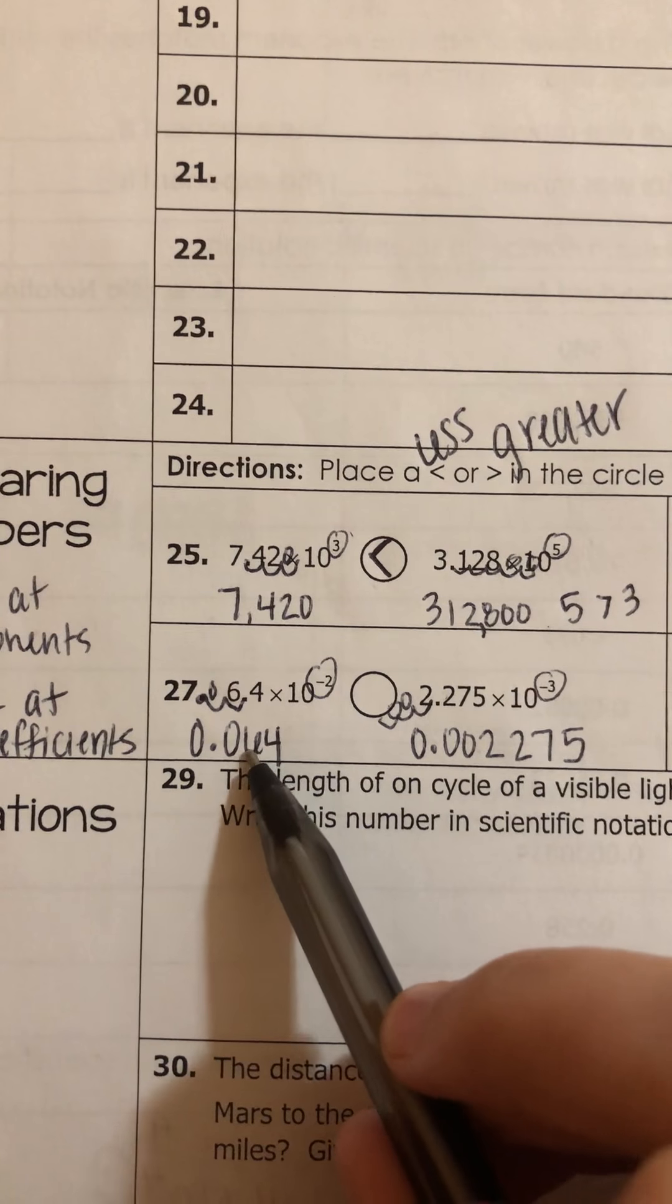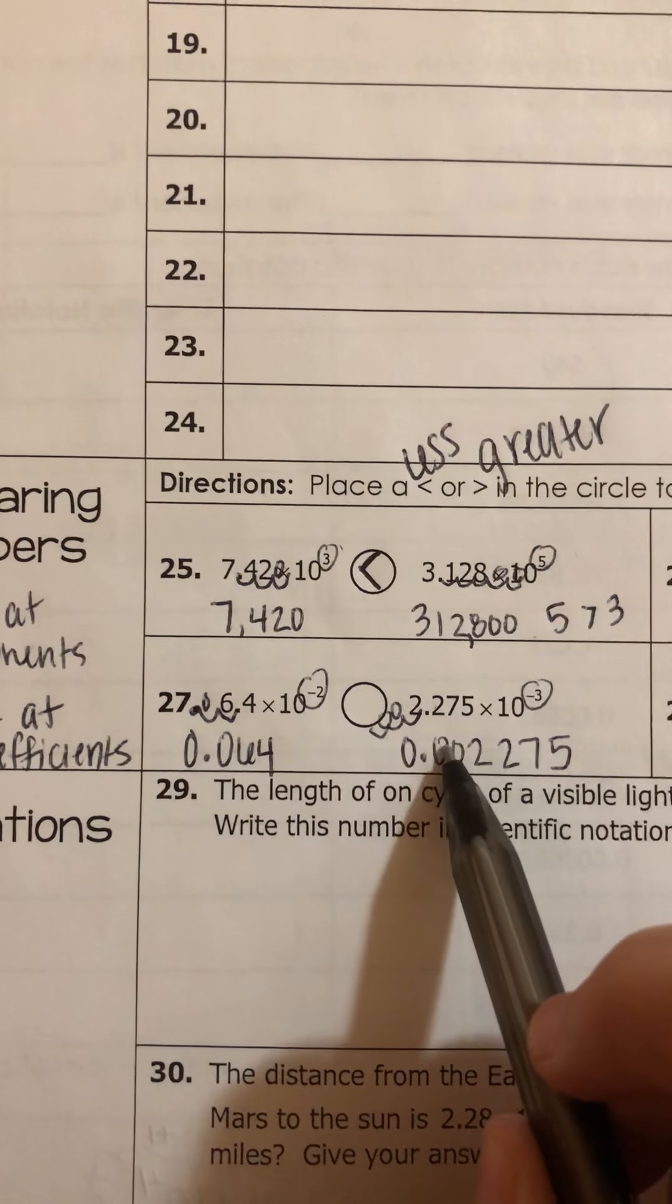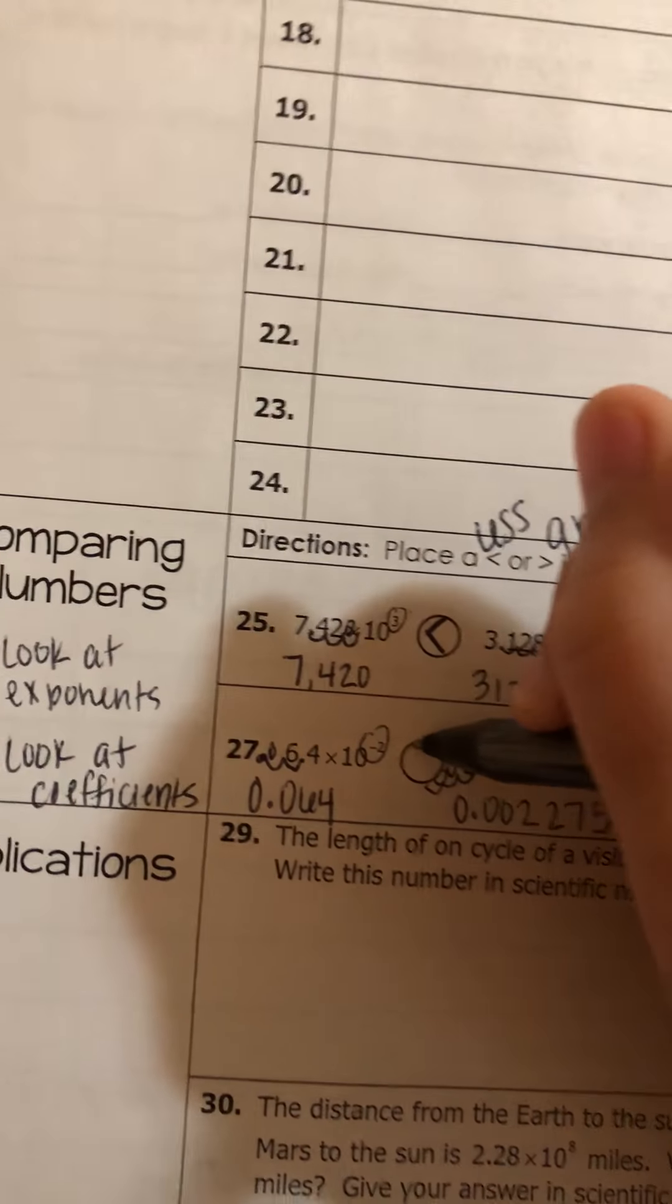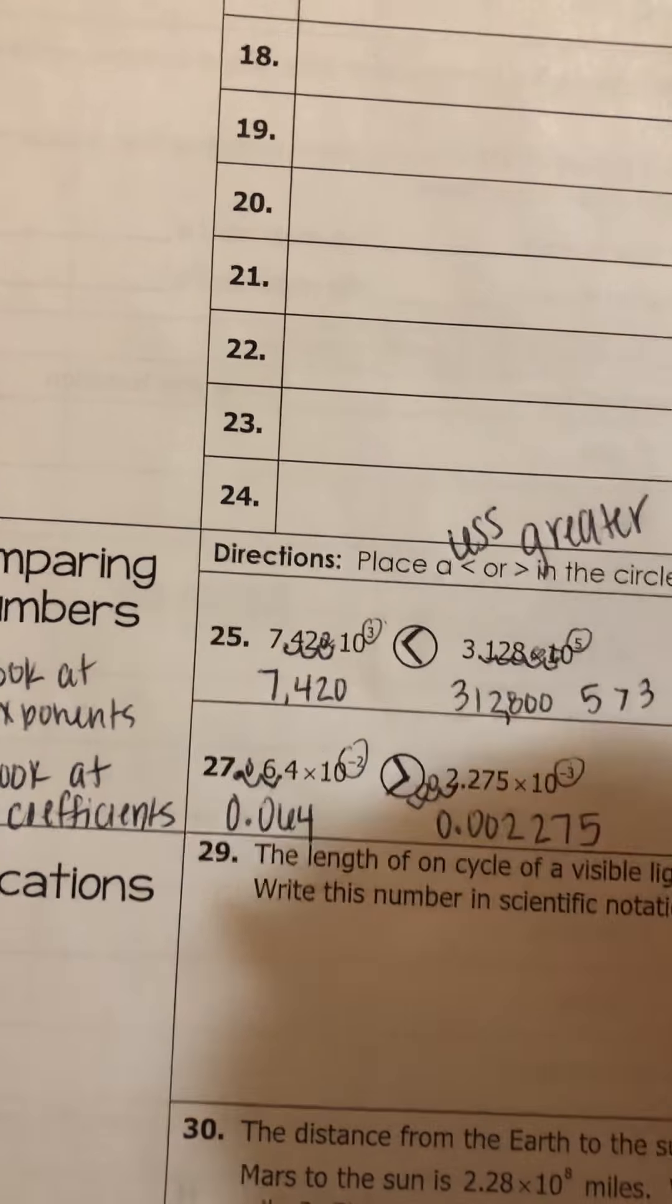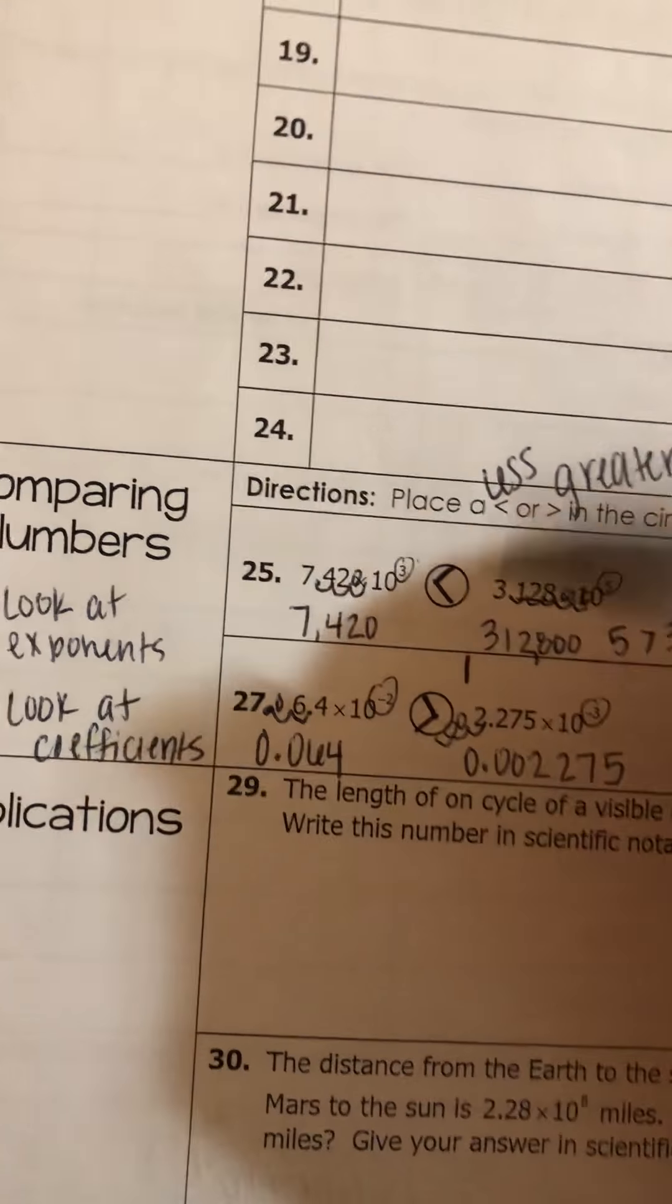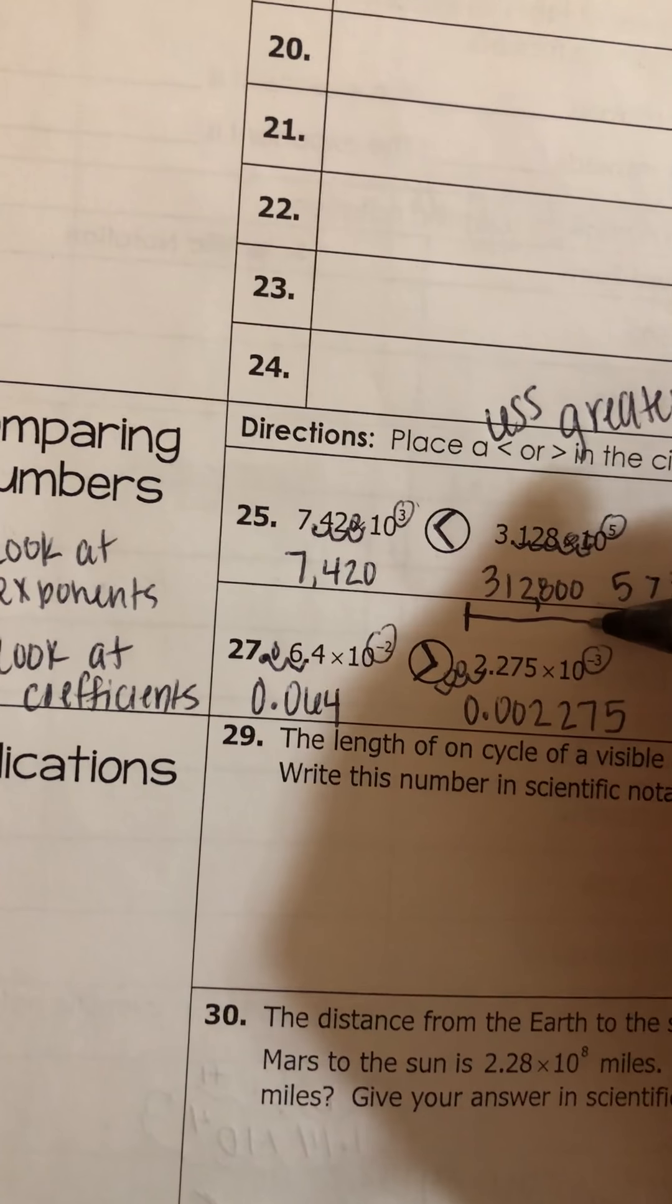So this one is greater than this one. And we could have done a number line. Another strategy is a number line.